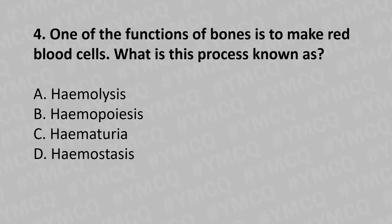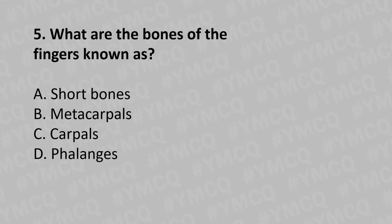Moving to our fourth question: One of the functions of the bone is to make red blood cells. What is the process known as? Option A: hemolysis, Option B: hematopoiesis, Option C: hematuria, Option D: homeostasis. The answer is Option B: hematopoiesis.